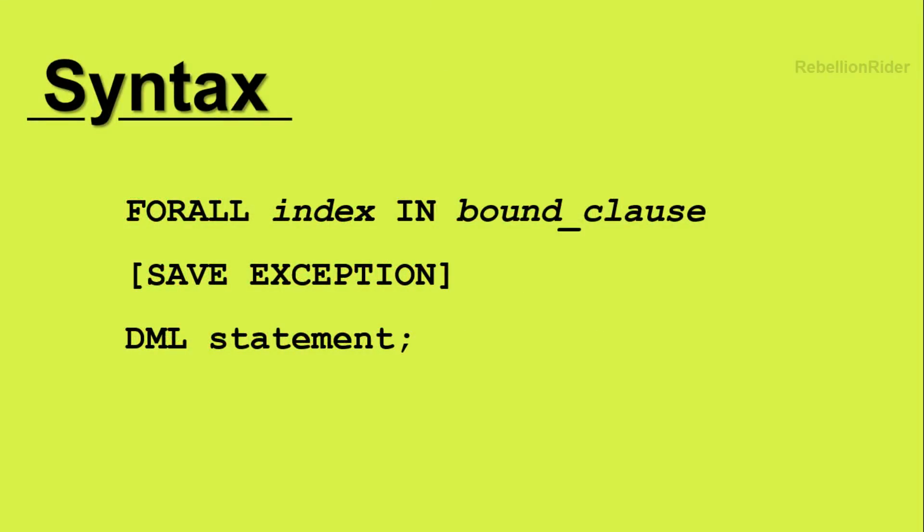The FORALL statement starts with the keyword FORALL followed by an index. This index is an implicitly defined loop counter, which means you do not need to define it — it is already declared by the PL/SQL engine for you, and its scope is limited to the FORALL statement in which it is defined.